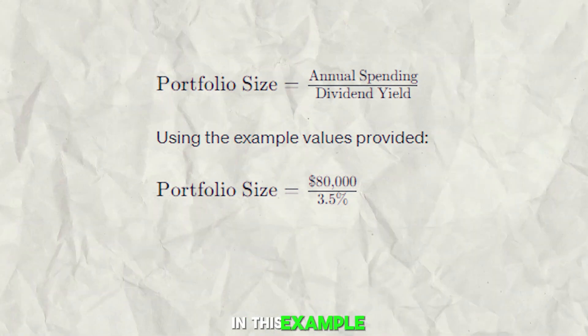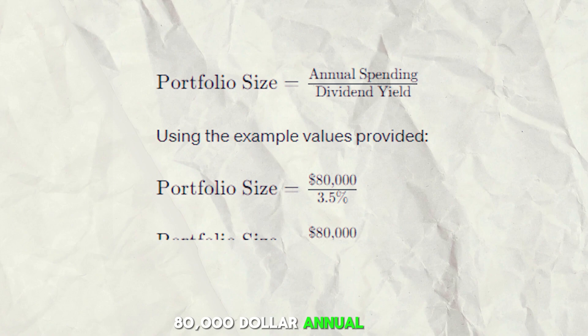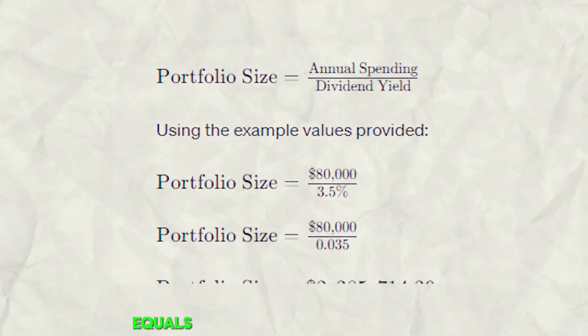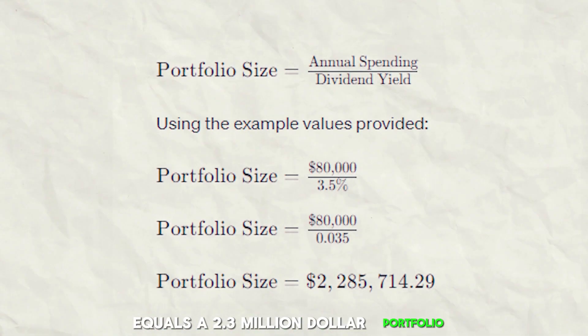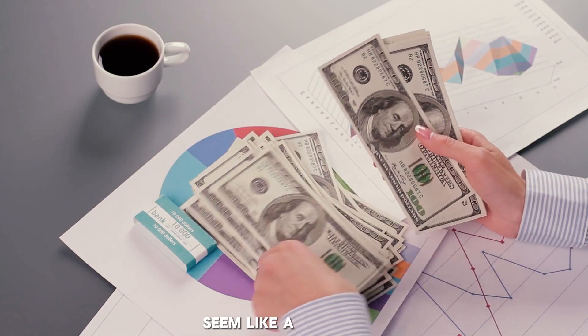In this example, $80,000 annual spend divided by 3.5% dividend yield equals a $2.3 million portfolio. Seem like a lot?